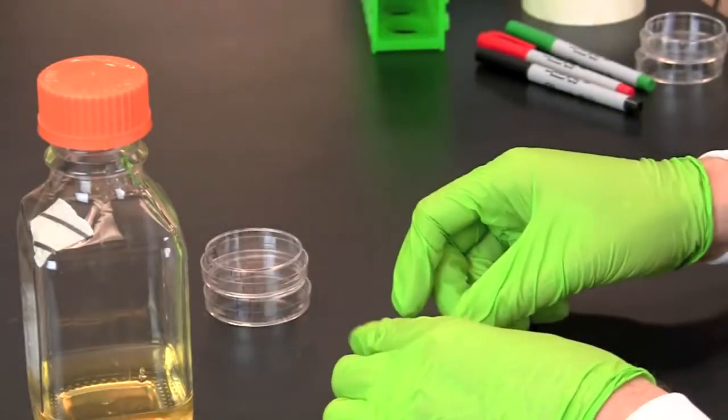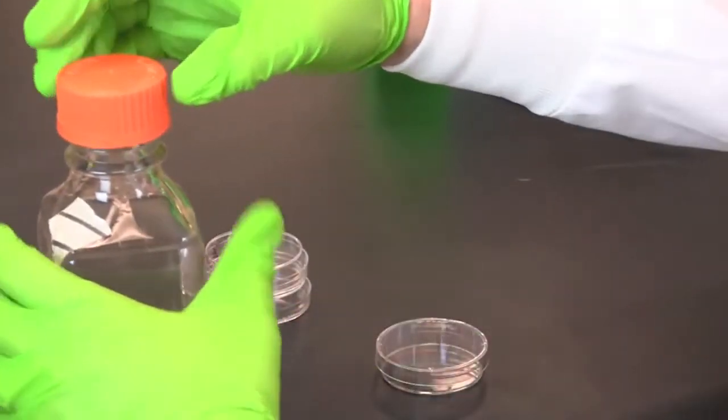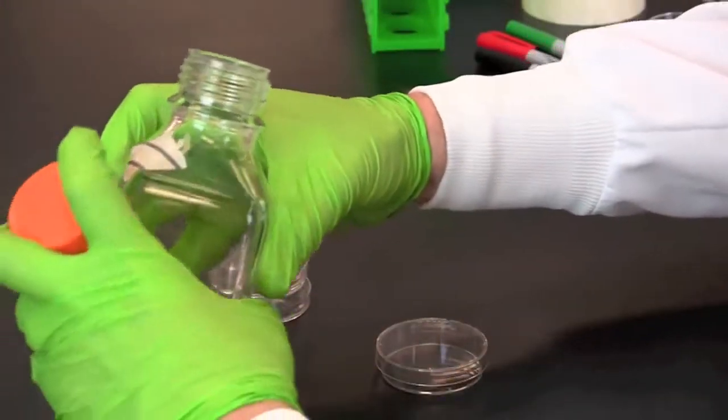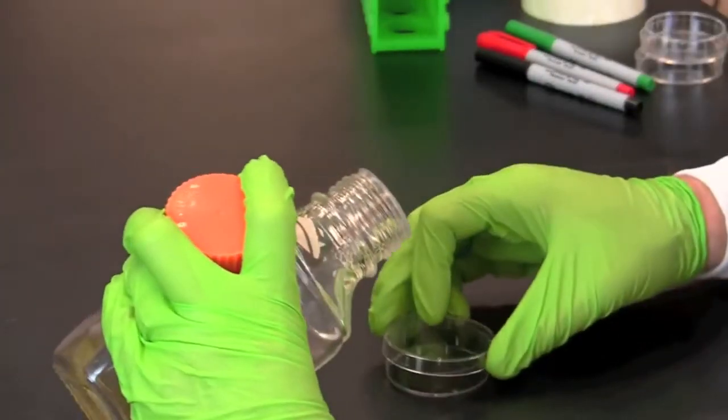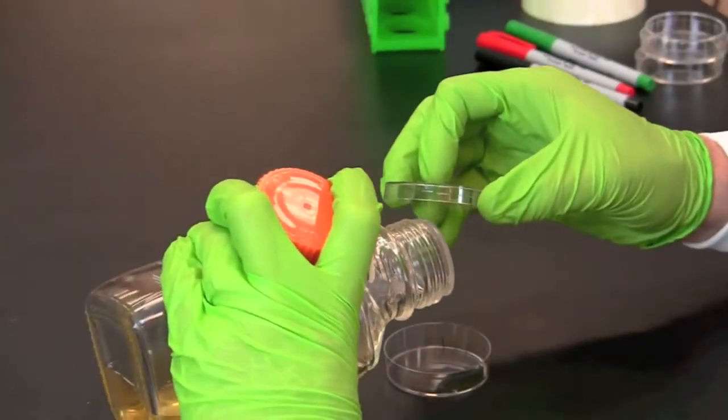To pour a plate, turn the plate with the base on the bottom. Use aseptic technique and hold the lid of the plate to shield the base against contamination while pouring the LB agar.